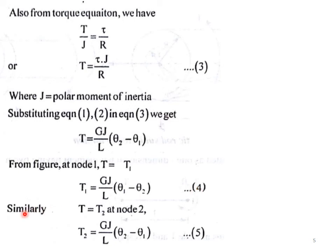Similarly, T is equal to T2 at node 2. T2 is equal to GJ by L into theta 2 minus theta 1, equation number 5.